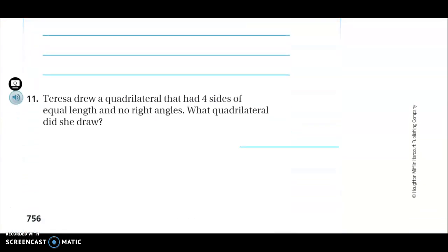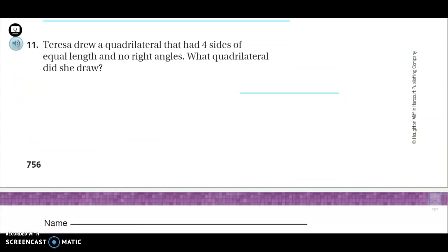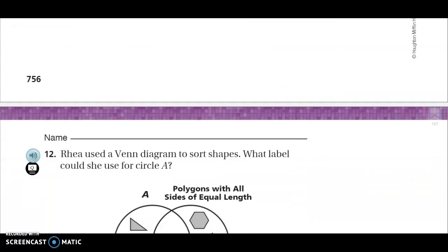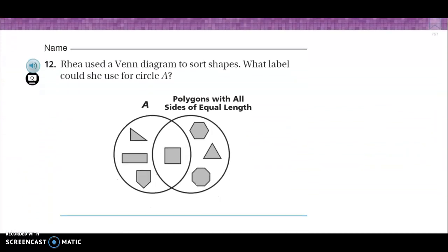Now skip number 10. Number 11. Theresa drew a quadrilateral that has four sides of equal length and has no right angles. What quadrilateral did she draw? Draw it and then write it down. Once again, make sure you're pressing pause and actually doing the work. Mr. Klaus, you're going too fast. Nope. Press pause. You're in control.